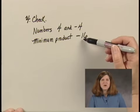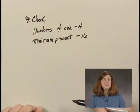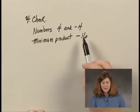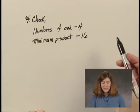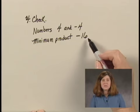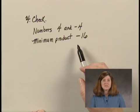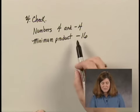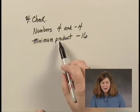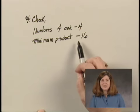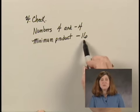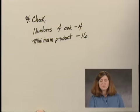It's difficult to check if that's the minimum product. We could try some other numbers who have a difference of 8, say, 0 and 8. Their product is 0, and that's larger than negative 16. No matter what numbers we try that have a difference of 8, we would find that none of them have a product that is less than negative 16. So this is the minimum product. These are the numbers we want.